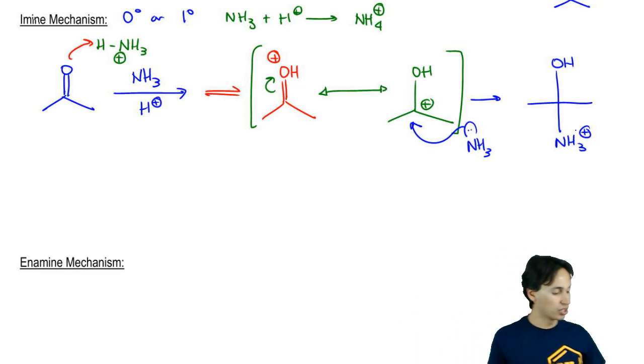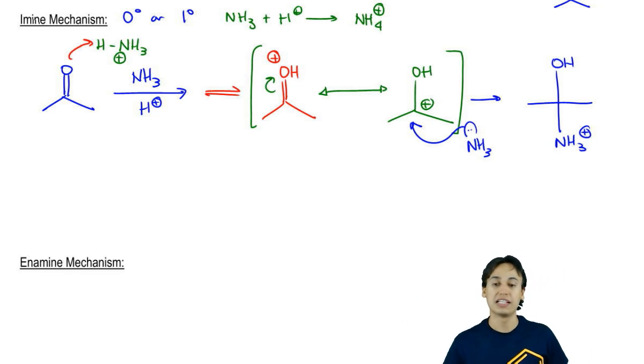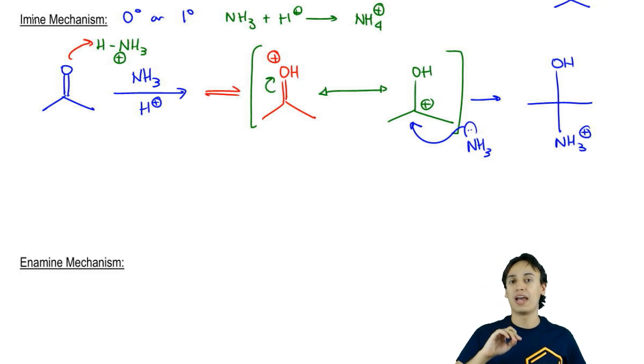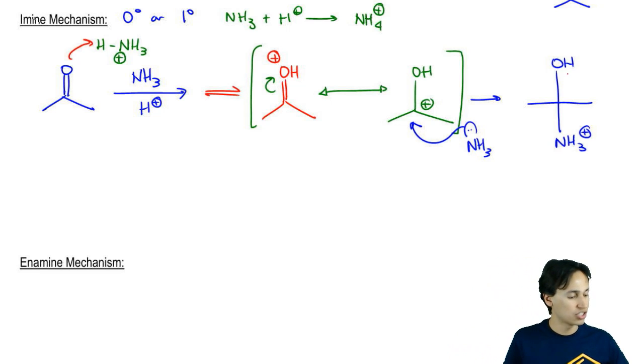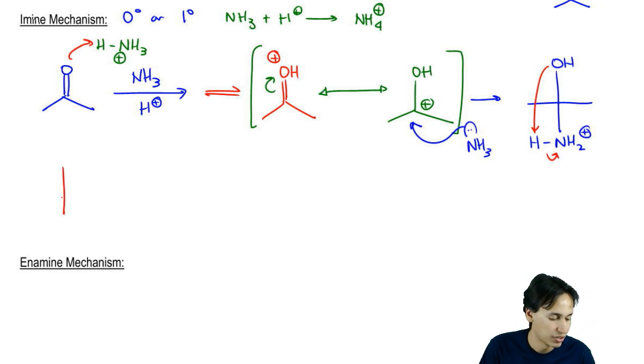Now the difference is going to happen here. We're going to consolidate a few steps. Instead of deprotonating this, we're just going to start trying to get rid of that alcohol. The way we could do that is through a proton exchange. A better way to write this NH3+ would be to take the 3, change it to a 2, and then draw one H out. That's going to allow me to do a proton exchange.